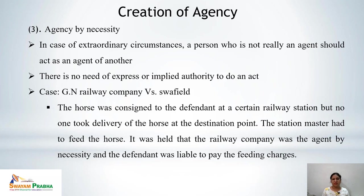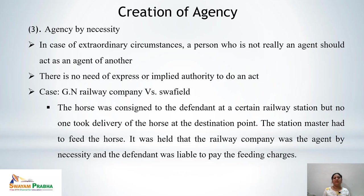Agency by necessity arises in extraordinary circumstances where a person may not be the real agent but acts to protect another's interests. No express or implied authority is required. In the case of G and N Railway Company versus Swaffield, a horse was consigned to the defendant at a railway station but no one took delivery. The station master had to feed the horse in the meantime. It was held that the railway company was the agent by necessity and the defendant was liable to pay the feeding charges. Thus, implied agency includes agency by estoppel, agency by holding out, and agency by necessity.